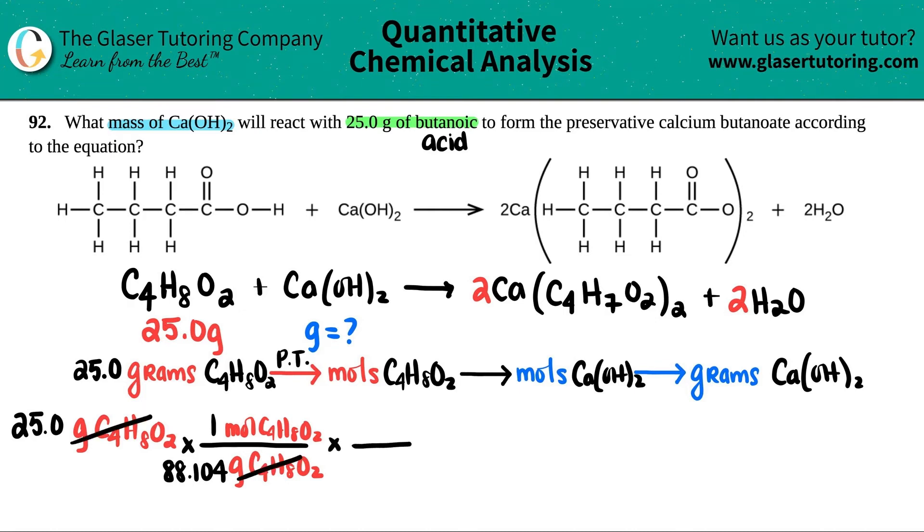So 25 grams of C₄H₈O₂ times by that ratio, we're going to throw the unit that we don't want on the other side. So on the bottom, grams of C₄H₈O₂. Just look over to see where we're going. We're going to moles of C₄H₈O₂. And a mole to gram relationship of the same compound is always using the periodic table.